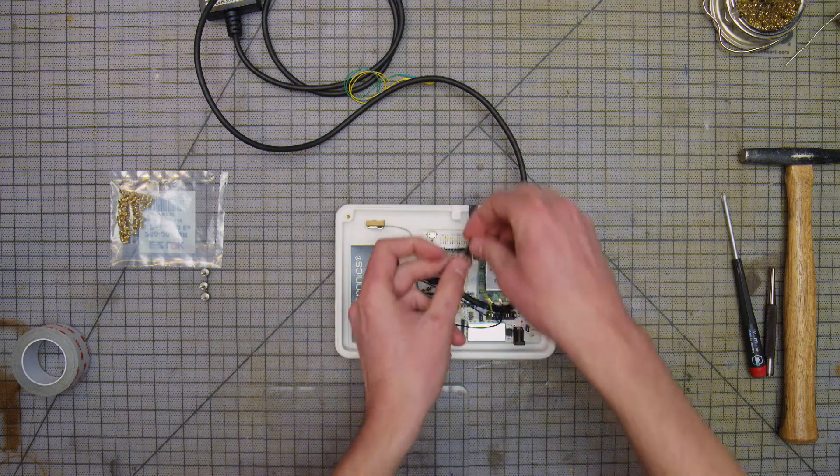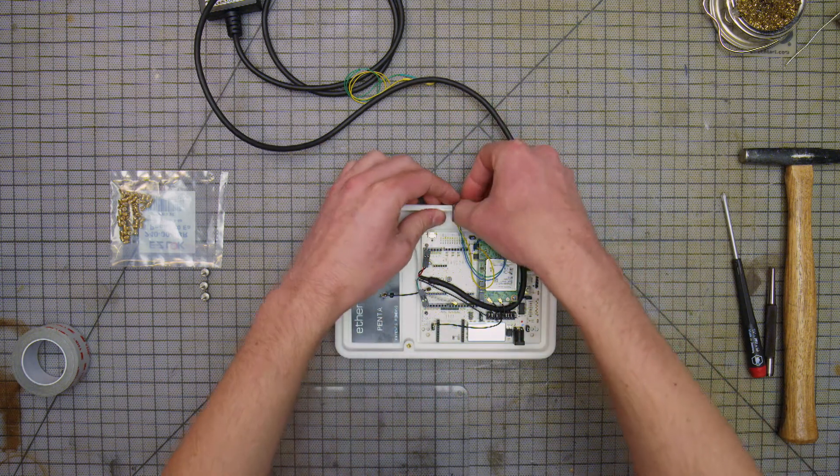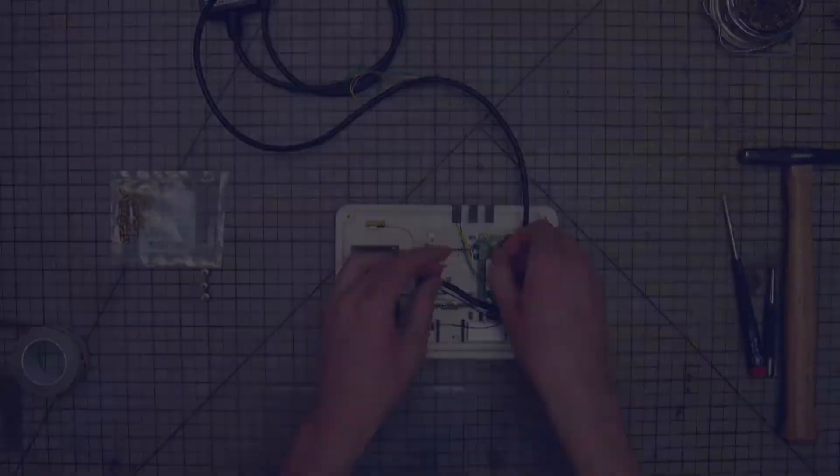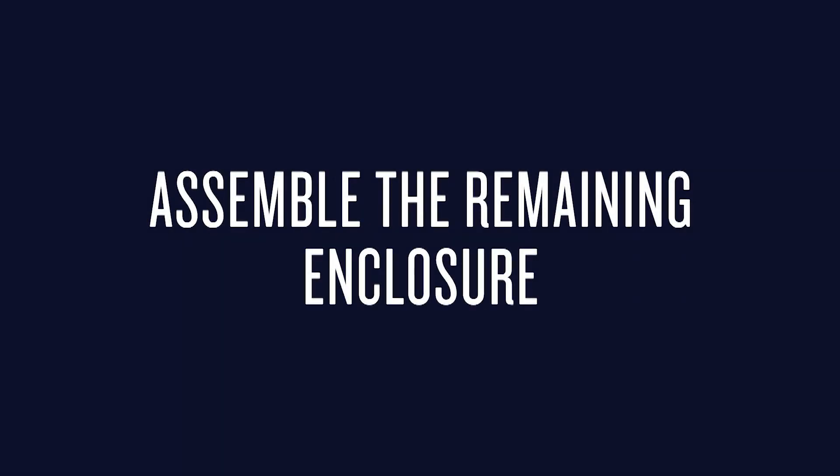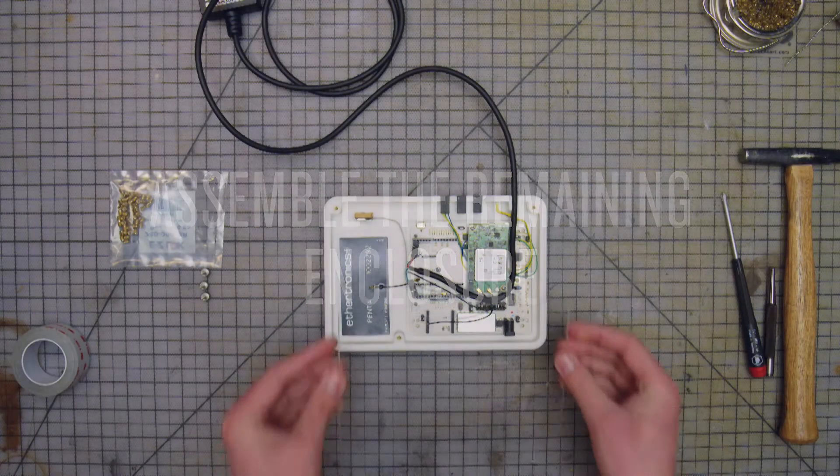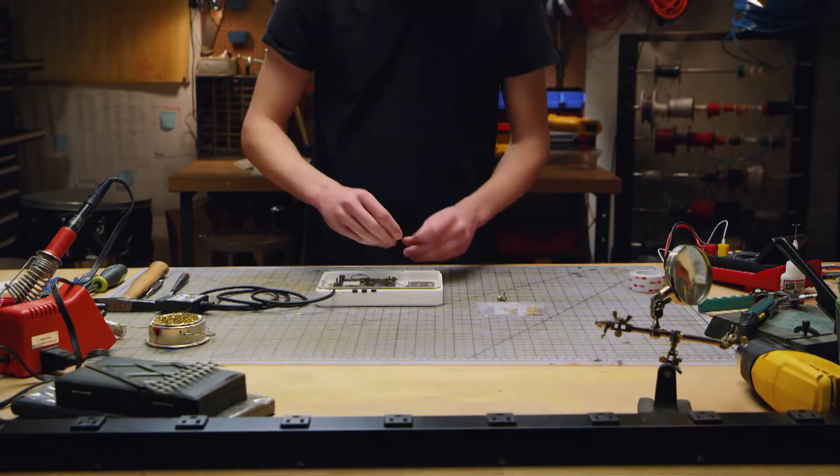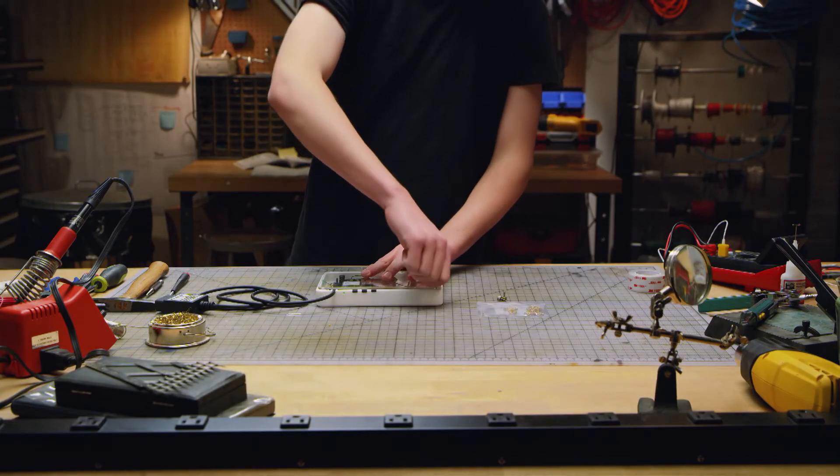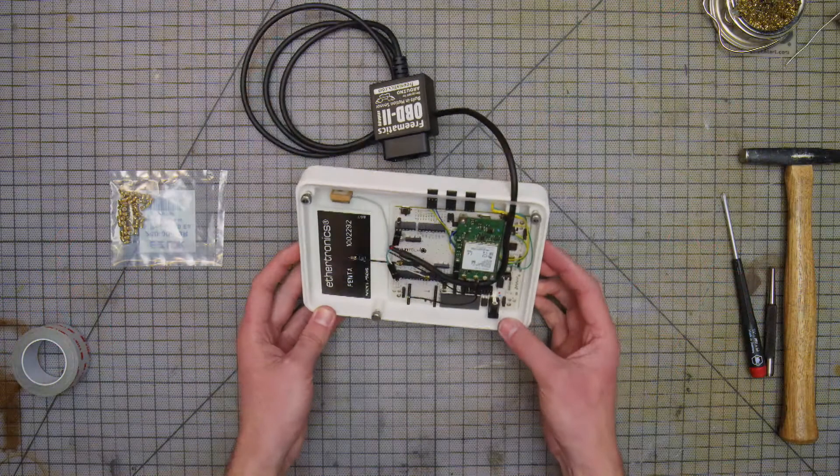The top of the closure also has the ability to accommodate a status LED. Place the acrylic faceplate over the device and then tighten all three thumb screws. And you're done!